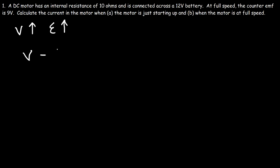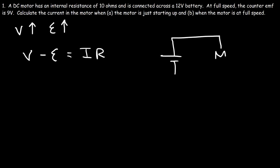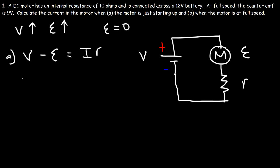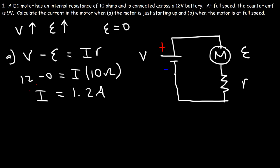The formula we need is: V minus the counter EMF equals IR, where V is the voltage of the battery, the counter EMF is the back EMF of the motor, and r is the internal resistance. For part a, the EMF is zero at startup, so it's 12 minus 0 equals I times 10 ohms. The current is 12 divided by 10, which is 1.2 amps. That's the current when the motor is just starting up.